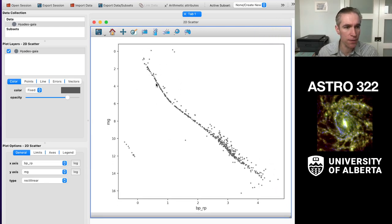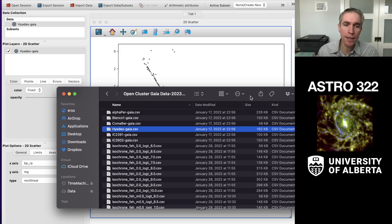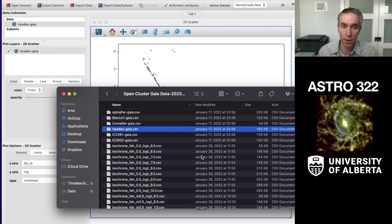And I have a beautiful Hertzsprung Russell diagram of the Hyades cluster. Looks like we've got some main sequence stars, a few things down here in the white dwarf corner, and some giants. And what I want to do is determine the age and the metallicity of this cluster using a set of isochrones.